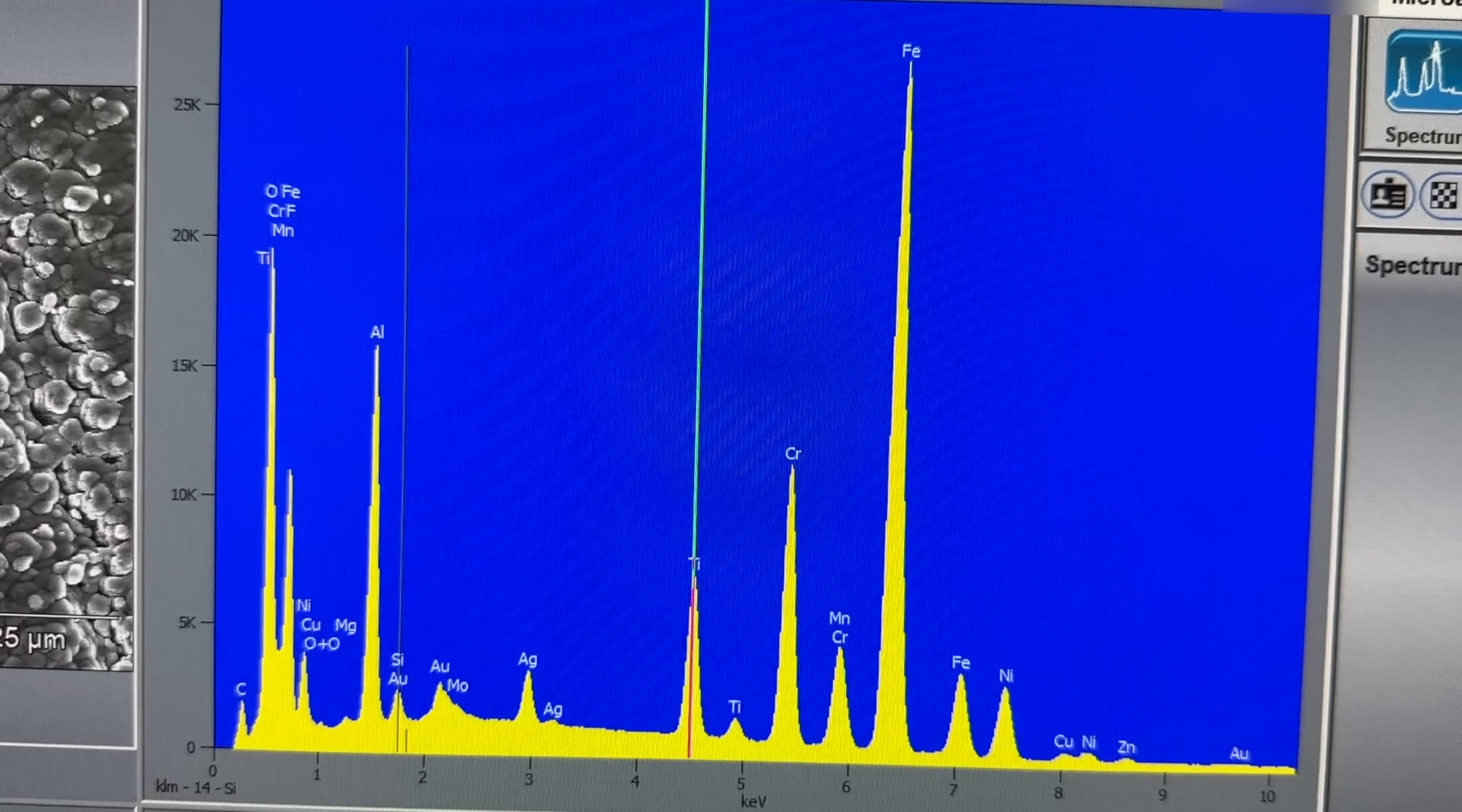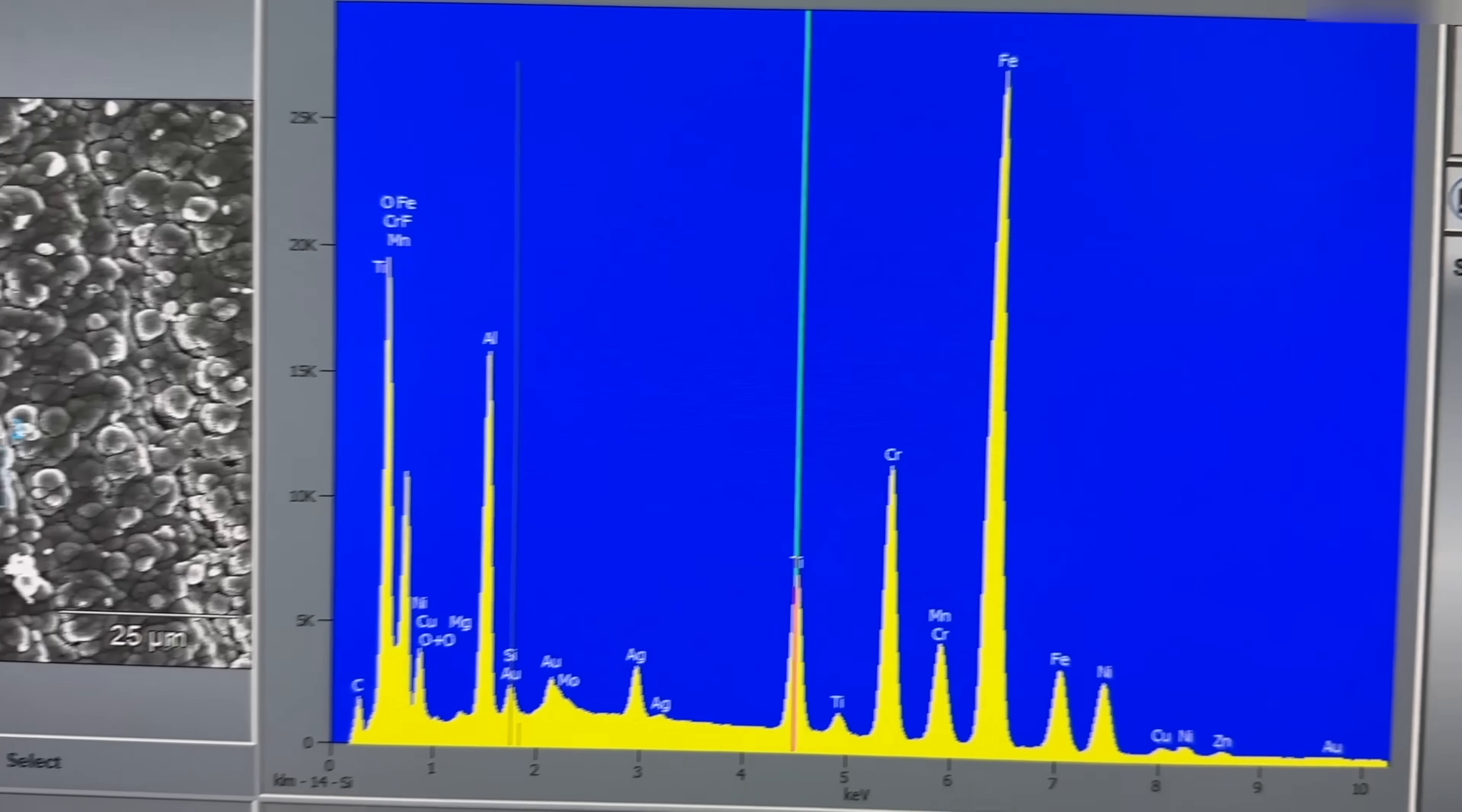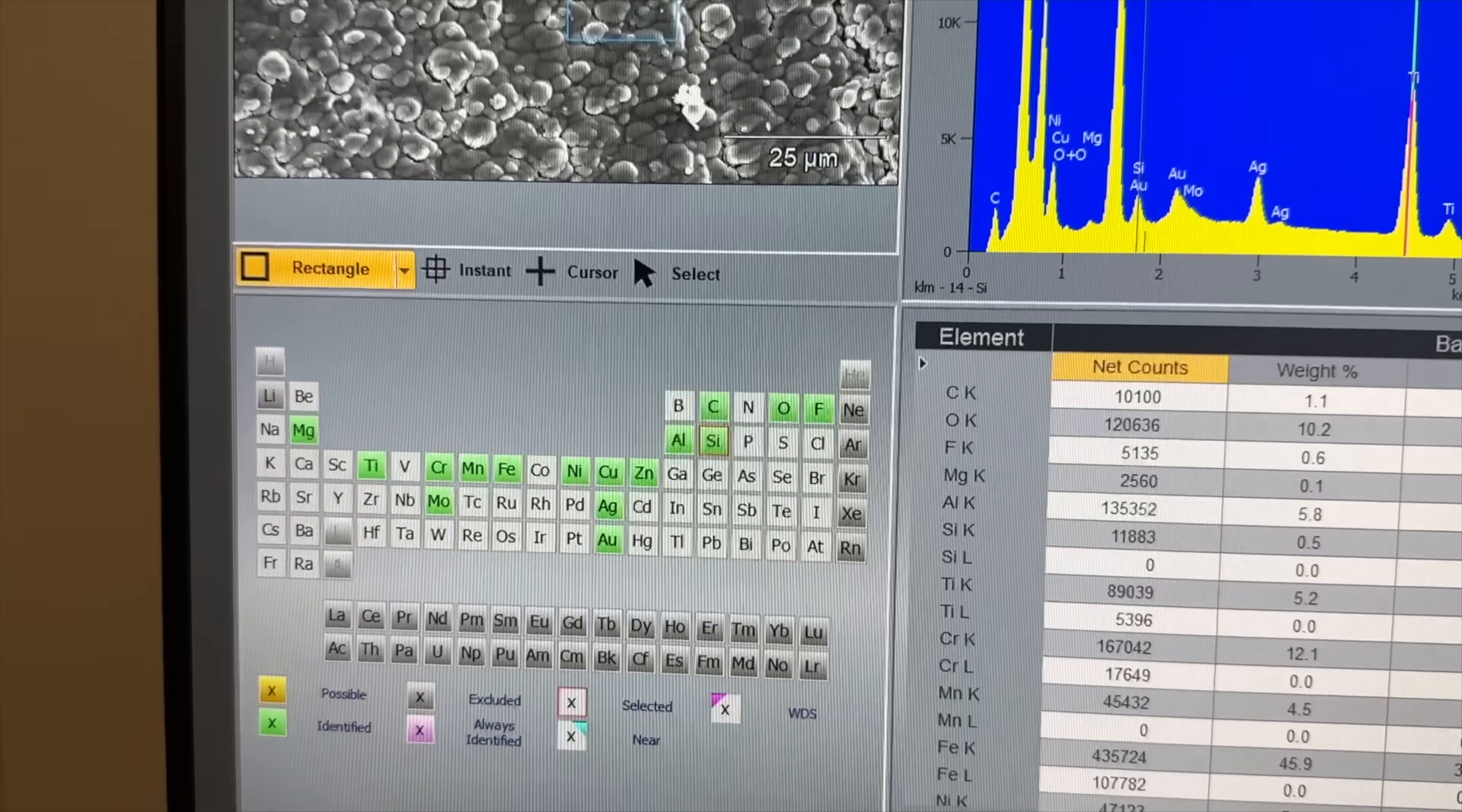You can see in our sample, we had primarily iron, chromium, aluminum, and titanium, but nothing harmful. Looking at this chart gives me confidence to proceed.